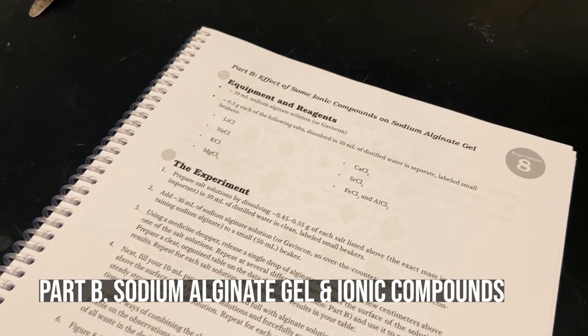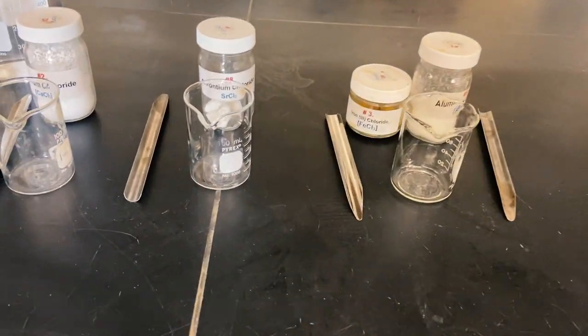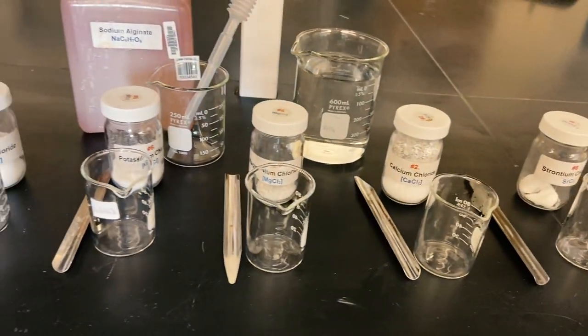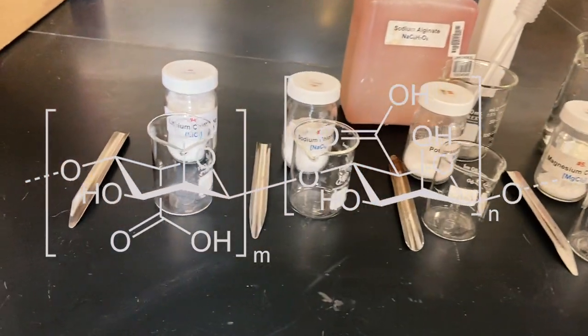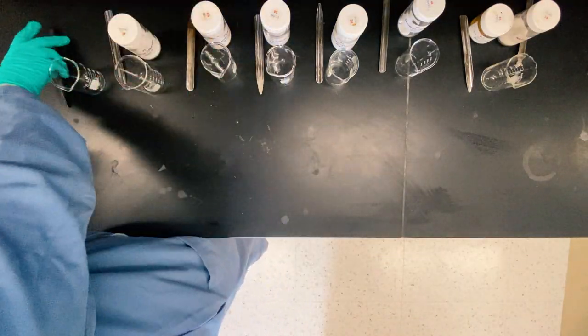And now we're on to part B. I'm going to be testing the effects of certain ionic compounds on sodium alginate. It's a gel that's extracted from brown algae, actually, and it's used in a lot of food stabilization.